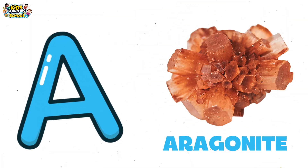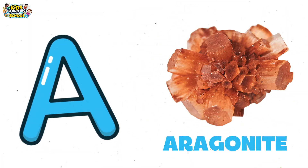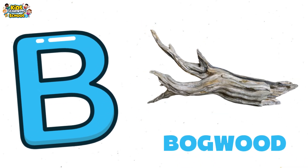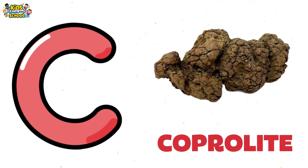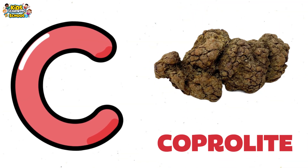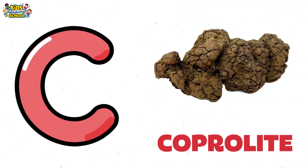A is for aragonite, crystal and bright. B is for baldwood, dark and light. C is for coprolite, ancient surprise.